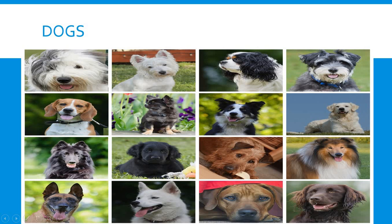Ctrl+P will bring up the pen option during your slideshow. You can use the pen option to draw around a dog to show which one you are talking about. To erase what you have drawn, use Ctrl+E to erase it. Or you can just tap E and both drawings will be erased immediately.